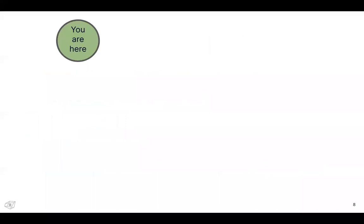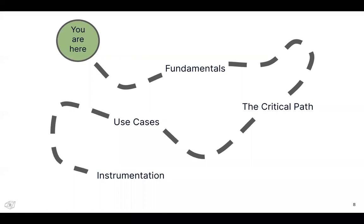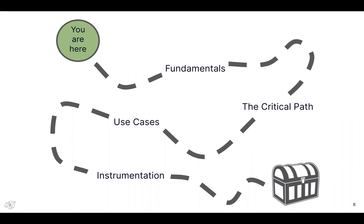The solution requires having the right data, setting the right goals, and giving teams ownership to actually affect that. Today I'll go through some fundamentals of distributed tracing, including a key concept called the critical path. I'll talk about use cases including improving communication, supporting DevOps practices, and bringing performance and reliability back under control. Then I'll talk about concrete first steps, including making a plan for how to instrument services.